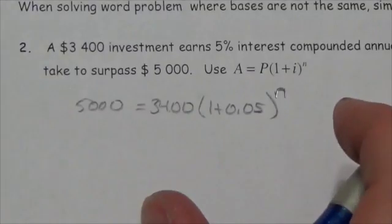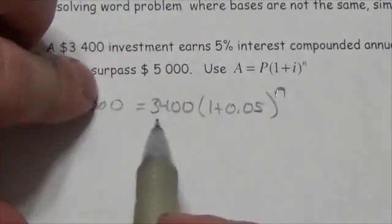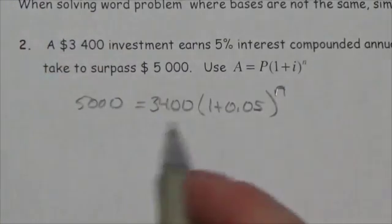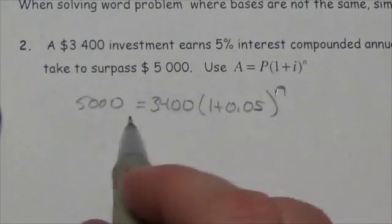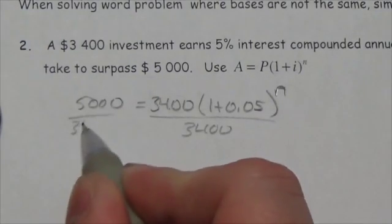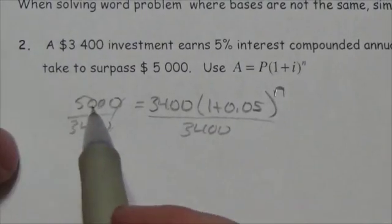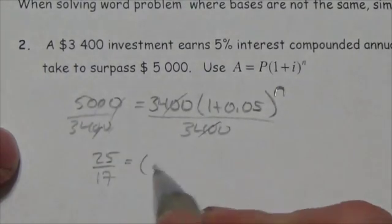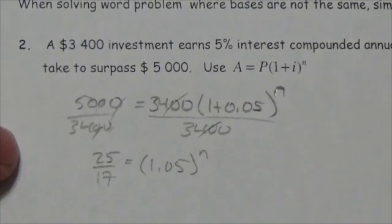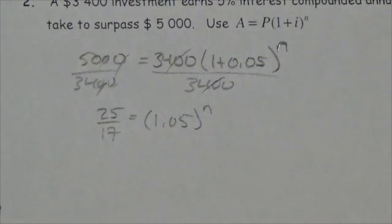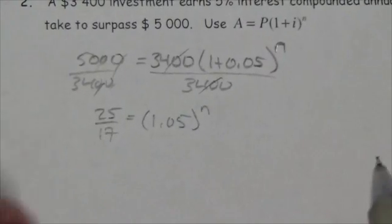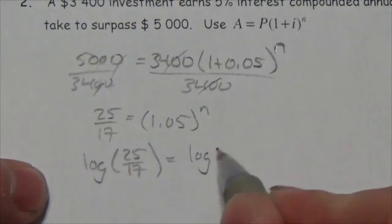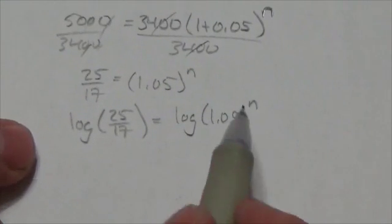I need to get the power isolated. That 3,400 is a coefficient multiplied after the exponent is applied, so I divide both sides by 3,400. Cancelling hundreds and simplifying, 5,000 over 3,400 reduces to 25 over 17. On the other side, I have 1.05 to the n — the power is now isolated. To solve for n, I take the log of both sides, which allows me to bring n down. The right-hand side becomes n times log of 1.05.